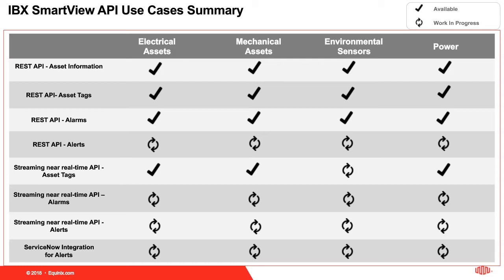The Streaming Alarms API streams alarms as they are triggered, acknowledged, and cleared in the system. The Streaming Alerts API streams alerts as they are created and acknowledged in the IBX SmartView application. We are also building a capability integrating IBX SmartView alerts into customer ITSM systems, starting with ServiceNow — more on that in a subsequent webinar. In this particular webinar, the scope outlined by the red rectangle on screen covers: the asset REST API, asset attributes, alarms, and streaming asset data to our Google PubSub channel.